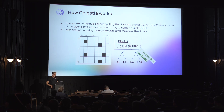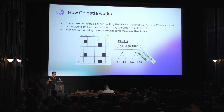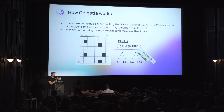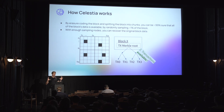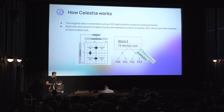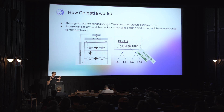Some relevant details of how Celestia works for those who might not be familiar: data availability sampling requires that you build your block in a very specific way. You take the original transaction data, divide it into chunks, then extend those chunks using Reed-Solomon erasure coding into an extended block. Nodes that are sampling choose randomly among that block, and each time they sample successfully they have higher confidence that the whole block data is available. The block data is also Merkleized in a special way — each row and column of the 2D square is Merkleized into row and column roots.